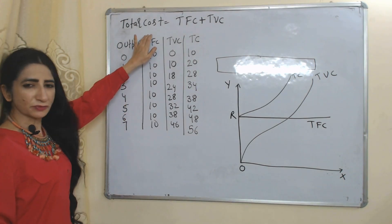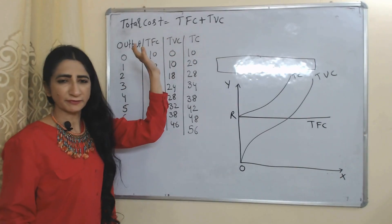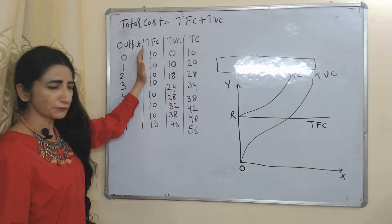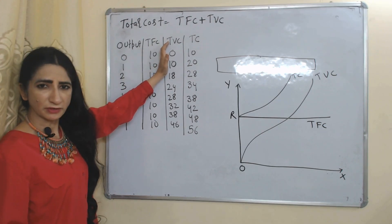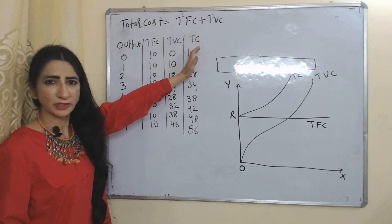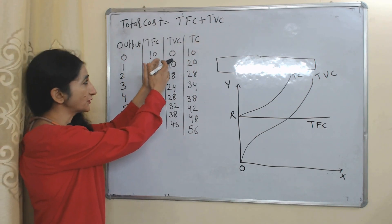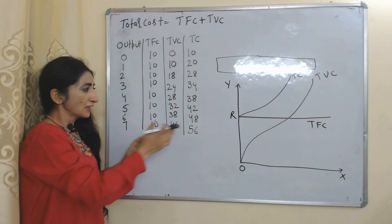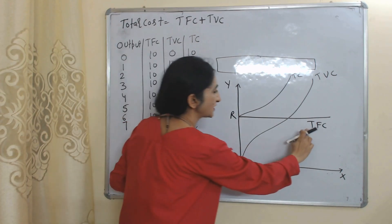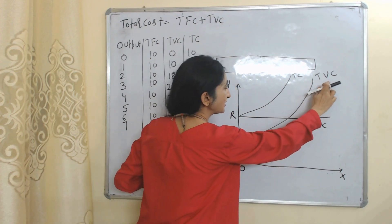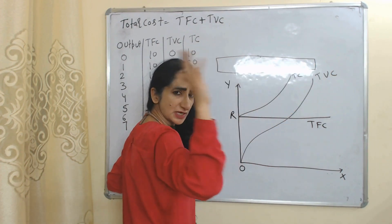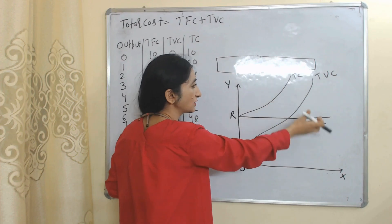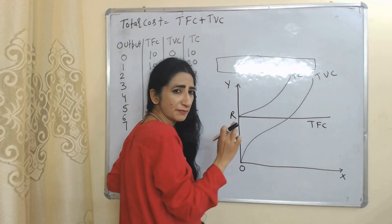Total cost equals total fixed cost plus total variable cost. In the table: the first column has output, the second has total fixed cost, the third has total variable cost, and the last column has total cost — which is TFC plus TVC. In the diagram, TFC represents total fixed cost, TVC represents total variable cost, and TC represents total cost equal to TFC plus TVC.